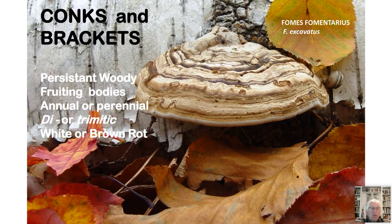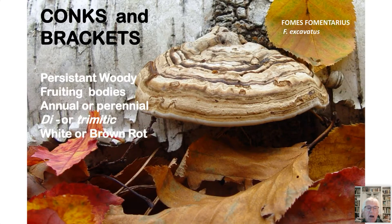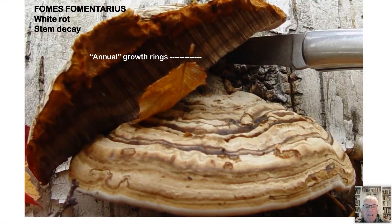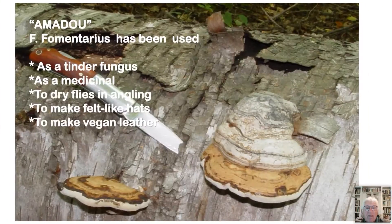Fomes fomentarius is one of the most common we see — really hard; there are pictures of people standing on them. It's commonly called the hoof fungus because it looks like a horseshoe or the hoof of a horse. These are persistent, woody fungi — annual or perennial, causing white rot. This one appears to be growing on birch. Here you can see those annual growth rings — every year this mushroom will add another layer on the bottom while the old one stays behind, making it a perennial. A common name for this is amadou, and it's often called the tinder fungus.